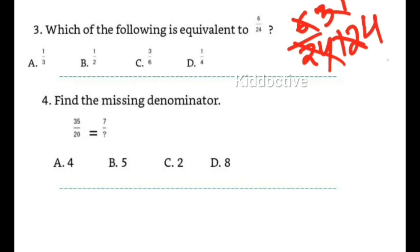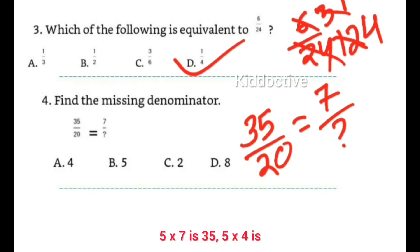Find the missing denominator. Here it's written: 35/20 equals 7 over what? Five sevens are 35, five fours are 20, so the answer is four.